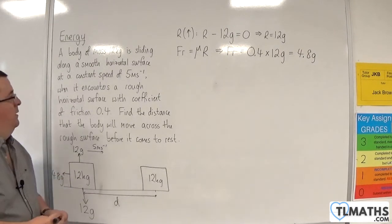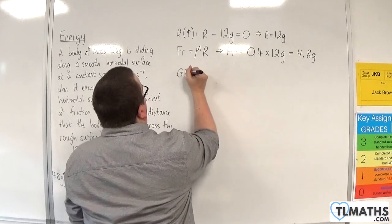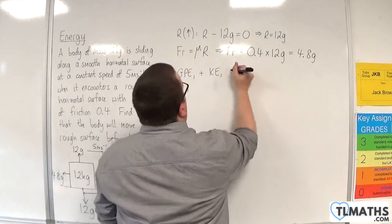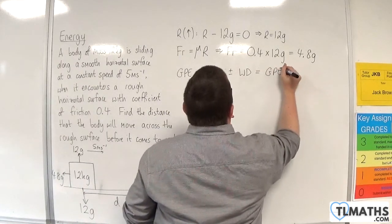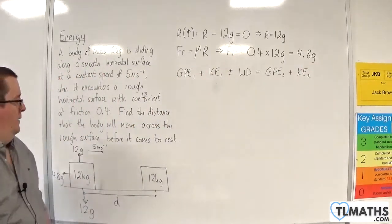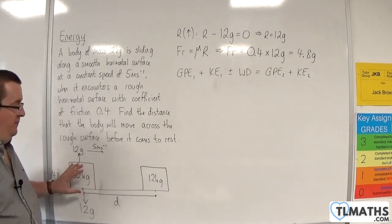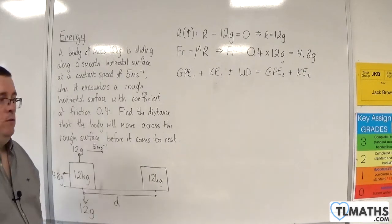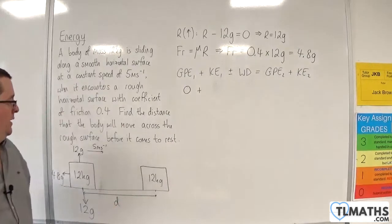Now we can go into the work energy principle. We have the initial GPE plus the initial kinetic energy plus and minus work done is going to be equal to the final GPE plus the final KE. Now, because the block is on the horizontal surface, the initial GPE will be 0, we'll take H to be 0.